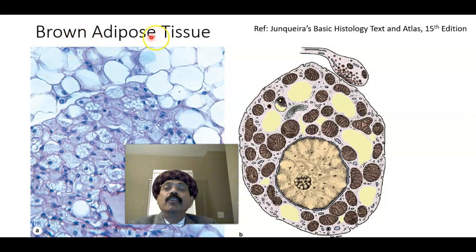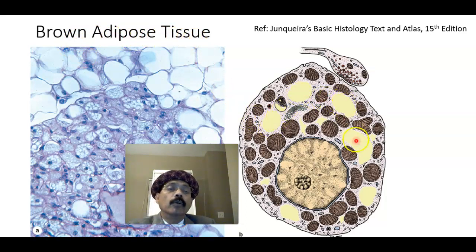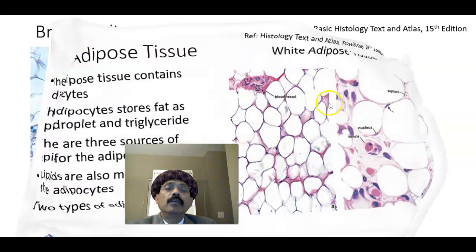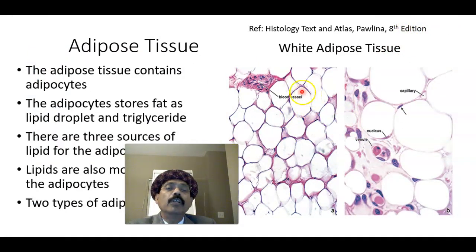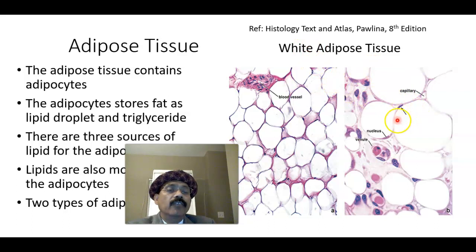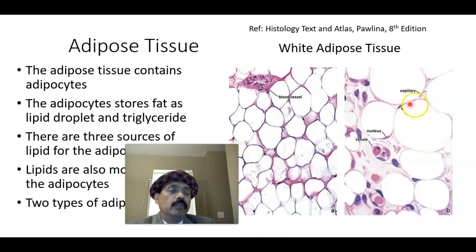The brown adipose tissue differs from white adipose tissue — here we have multiple locules of fat. In white adipose tissue, the fat droplets are unilocular: one fat droplet per cell. The nucleus is at the extreme periphery, and the cytoplasm is very thin and close to the cell membrane. White adipose tissue contains only a few organelles: a few mitochondria, smooth endoplasmic reticulum, and Golgi apparatus found at the periphery of the cytoplasm.